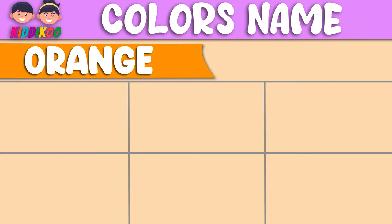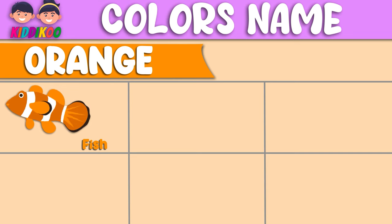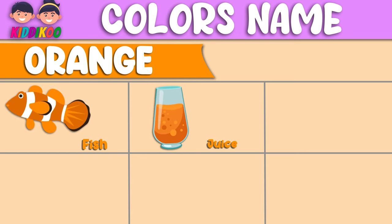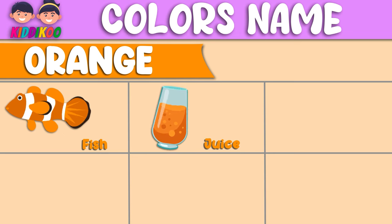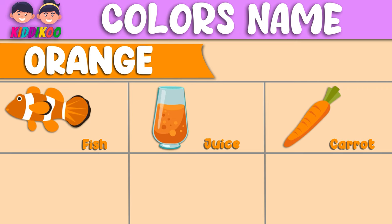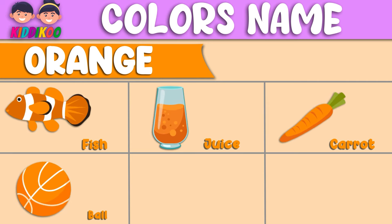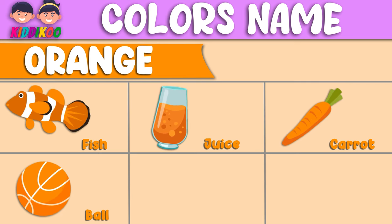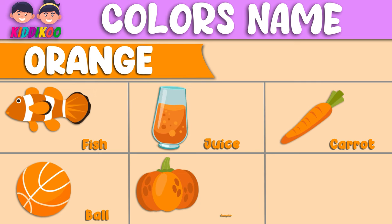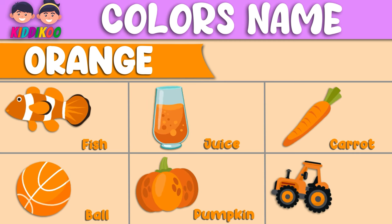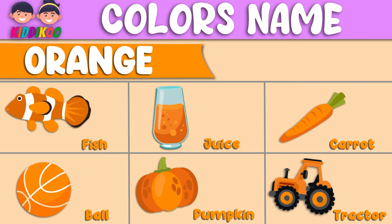This color is orange. Fish — this fish is orange. Juice — this juice is orange. Carrot — this carrot is orange. Ball — this ball is orange. Pumpkin — this pumpkin is orange. Tractor — this tractor is orange.